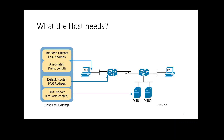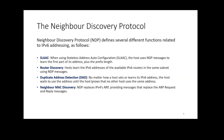A quick reminder: for a PC to communicate with other networks, hosts, and routers, similar to IPv4, it needs a unique IPv6 address, the associated prefix length, the default router (default gateway), and a DNS server should the host need to access the internet beyond its own network.